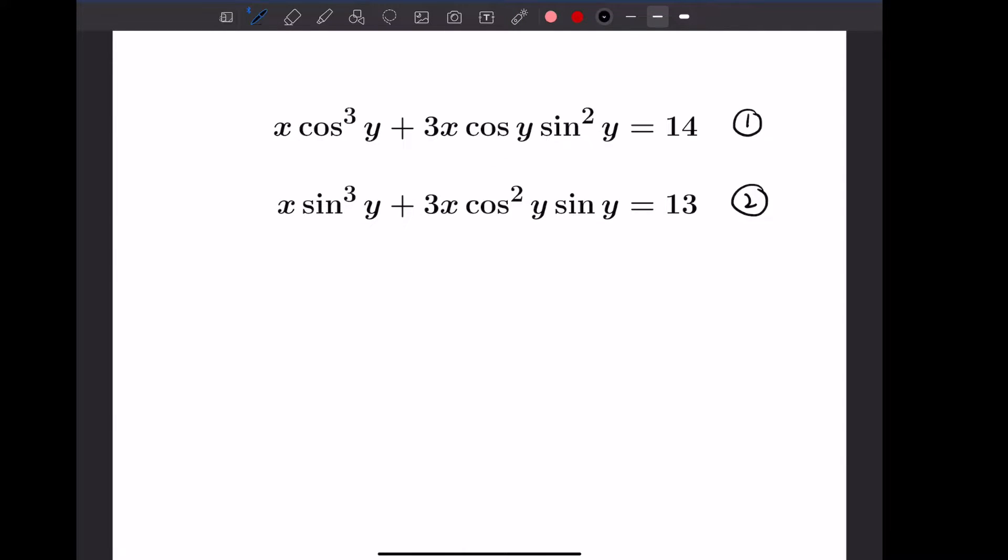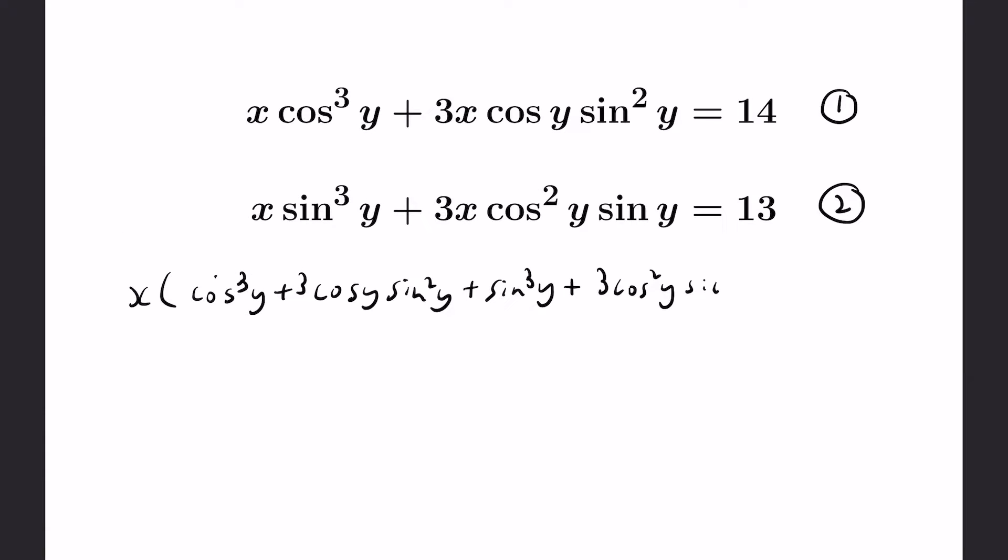So if you were to add these two equations, there's a common factor of x and then you're left with cosine cubed y plus 3 cosine y sine squared y, and then from the second equation you get a sine cubed y plus 3 cosine squared y sine y, and you end up with the fact that this is actually equal to the sum of these two things, which is 27.